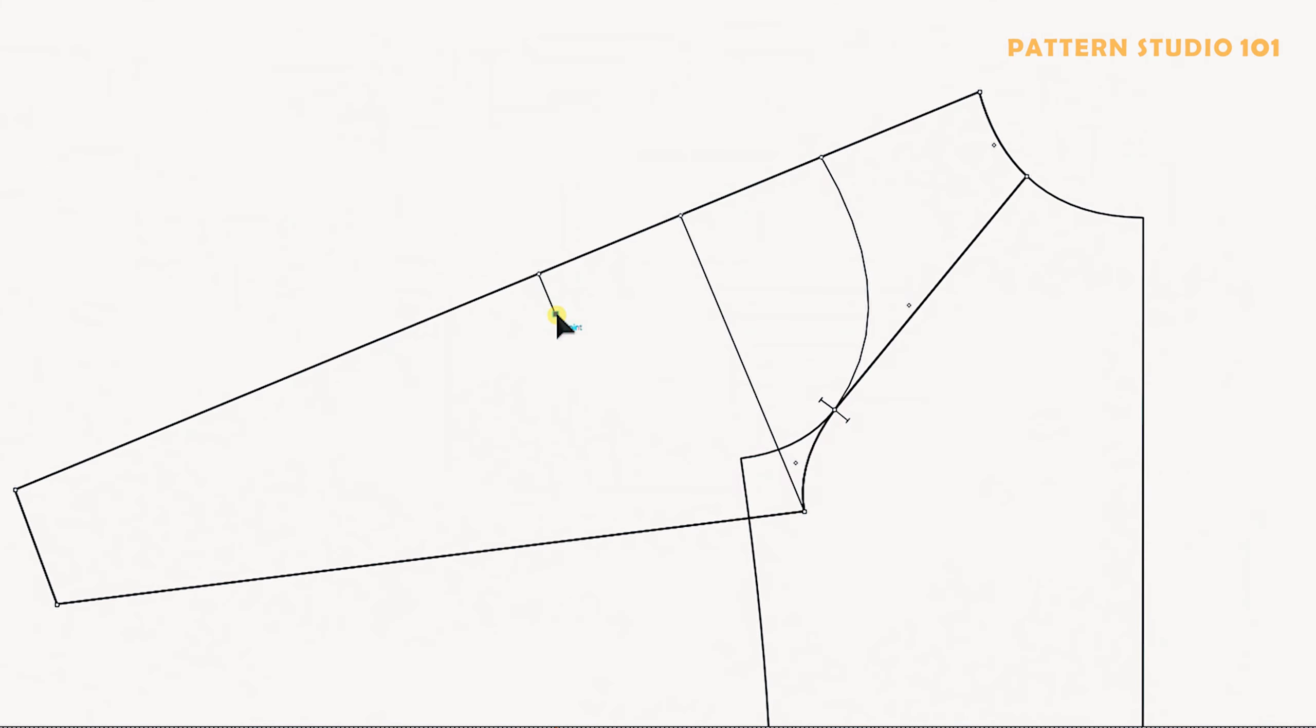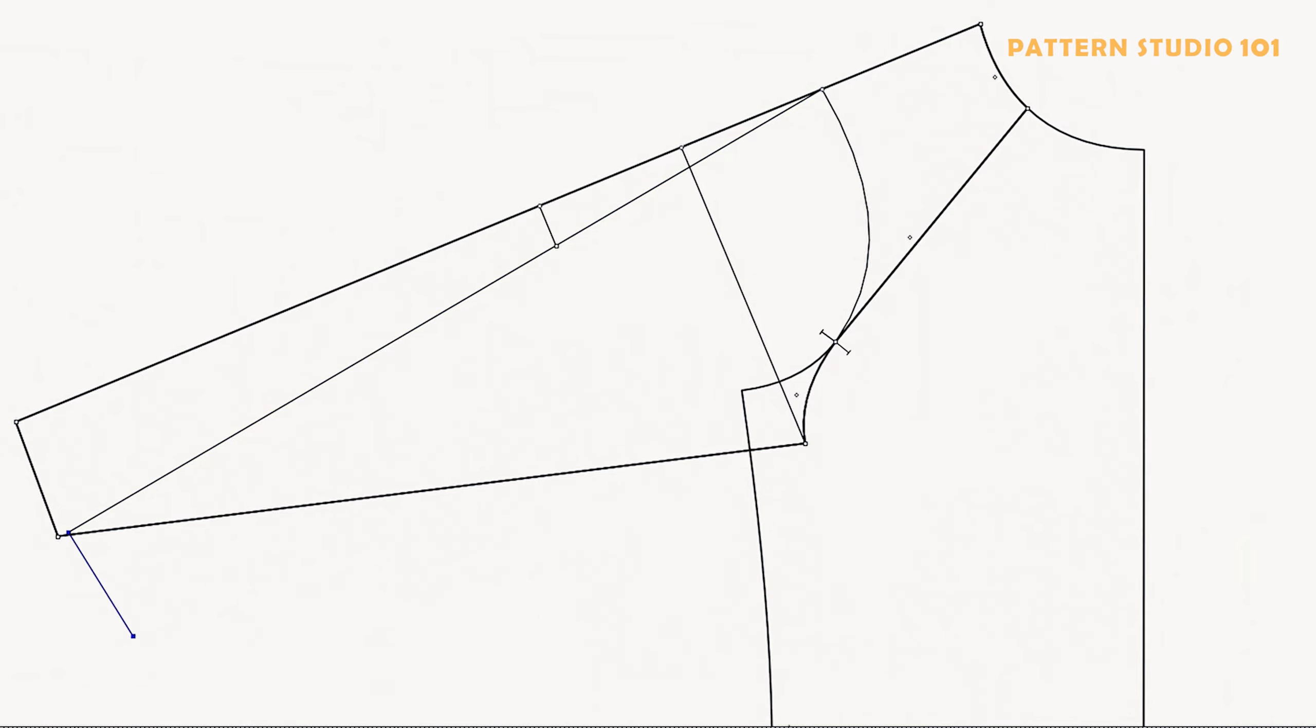Connect to the shoulder point and extend the sleeve length the same as the original. You're gonna keep the same sleeve hem width as well. Connect to the underarm point. You don't want to have a pointed shoulder. So draw a curve to make the shoulder nice and smooth.